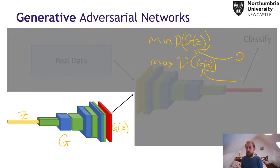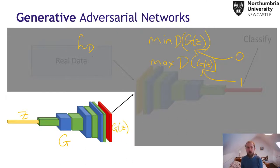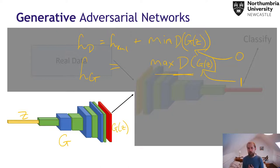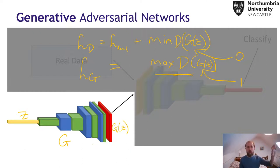The generator is trying to get d(g(z)) to be one. The discriminator's loss is for the real data — it tries to make real data end up at one — and for fake data it wants all of it to be zero. The generator's loss just focuses on the fake images. The generator never actually sees the real data, and this is what makes the generator so powerful and good at generating diverse images, unlike autoencoders — because this generator never actually sees any of the real datasets.